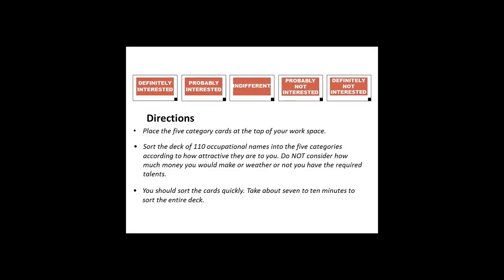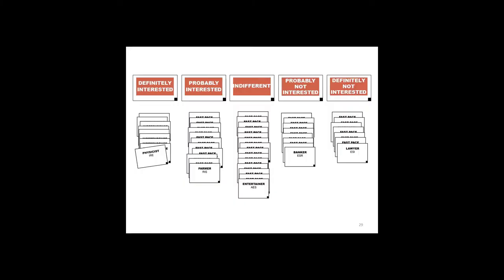I give the client a five-point scale from definitely interested, to probably interested, to indifferent, to probably not interested, and definitely not interested. I ask them to place the five category cards at the top of their workspace, then sort the deck of 110 occupational names into the five categories according to how attractive they are to the client — not considering how much money they'd make or whether they have the required talents, only according to how attractive those occupations are. They should sort the cards quickly, taking about seven to ten minutes. Each card has the name of an occupation and also a Holland code, though 95% of clients never notice it.